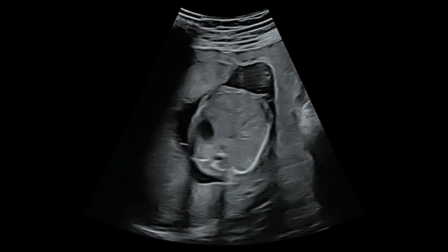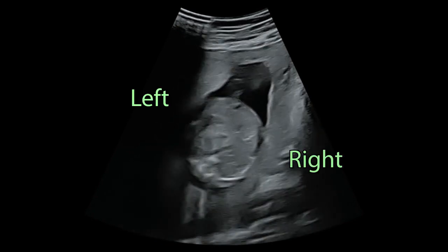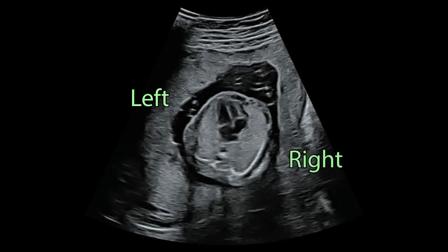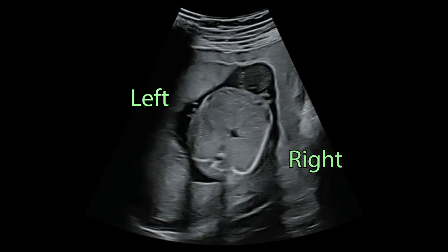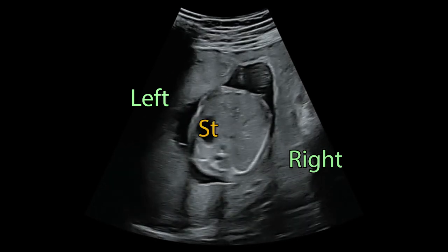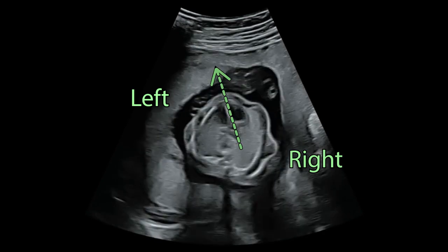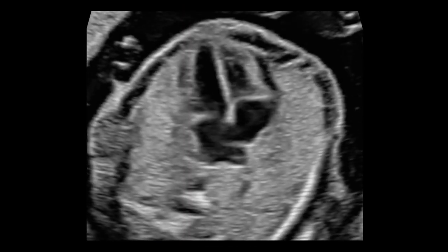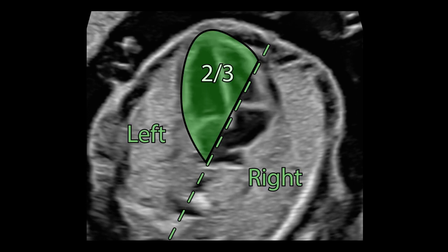The study of the Four-Chamber View starts with a correct identification of fetal laterality. An abdominal transverse cut shows the left-sided stomach. The heart is pointing to the left, and two-thirds of the heart is on the left side of the thorax. This is called levocardia.